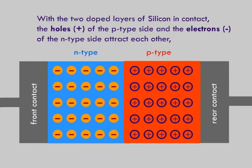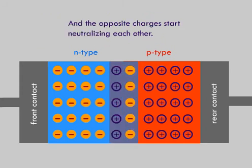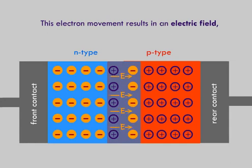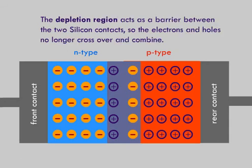With the two doped layers of silicon in contact, the holes of the P-type side and the electrons of the N-type side attract each other, and the opposite charges start neutralizing each other. This electron movement results in an electric field and forms the depletion region. The depletion region acts as a barrier between the two silicon contacts, so the electrons and holes no longer cross over and combine.